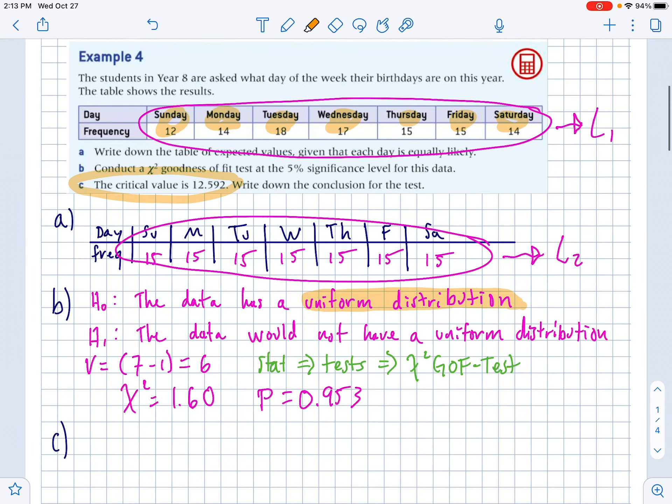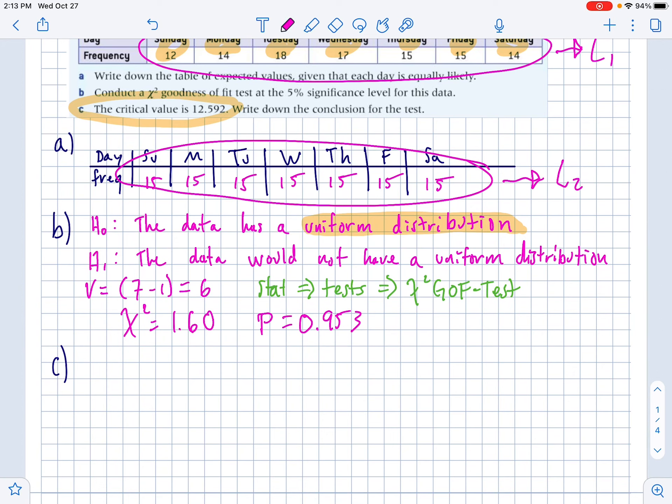Part C, the critical value is 12.592. So they tell us the critical value right there. We don't have to look it up in a table. So based off the chi-squared, 1.60 is less than 12.592. Also, the p-value, 0.953, which we're testing at a 5% significance, is bigger than 0.05.